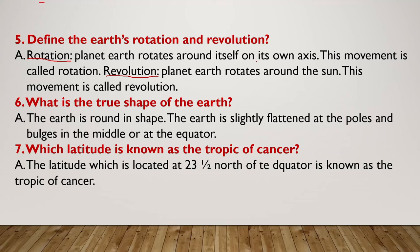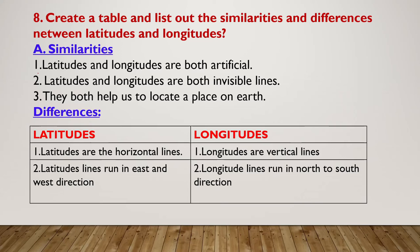The latitude which is located at 23 and a half degrees north of the equator is known as the Tropic of Cancer. So the latitude at 23.5 degrees north of the equator is the Tropic of Cancer.